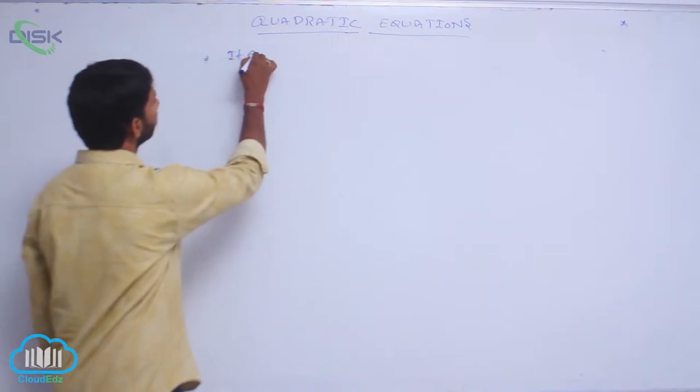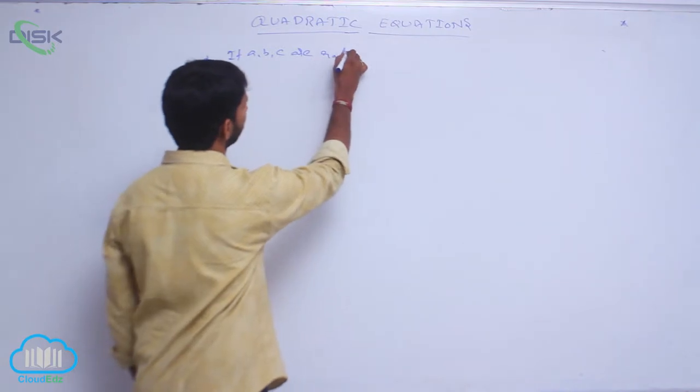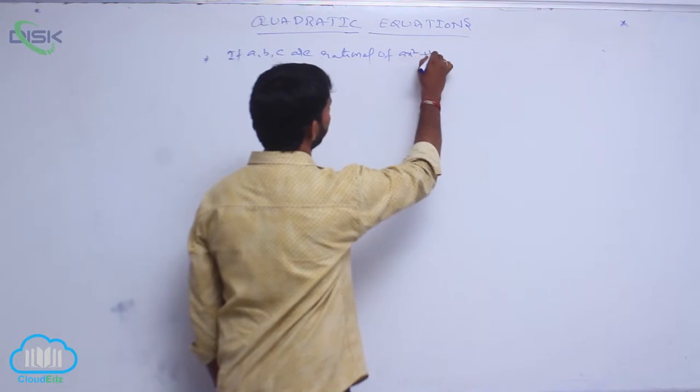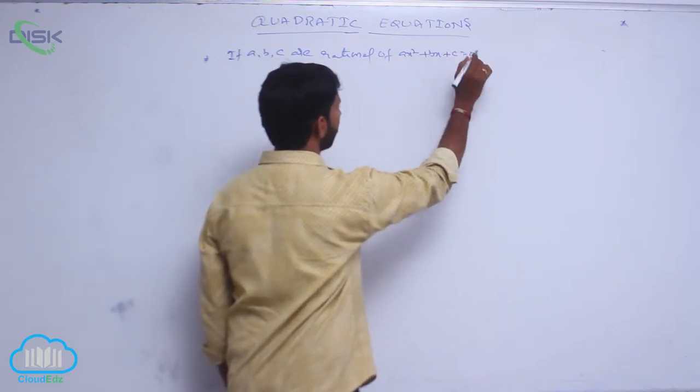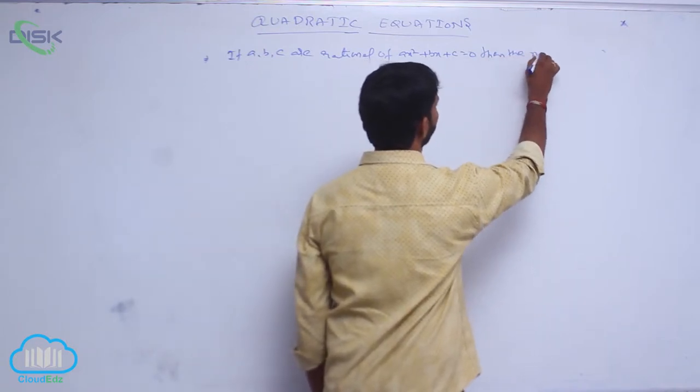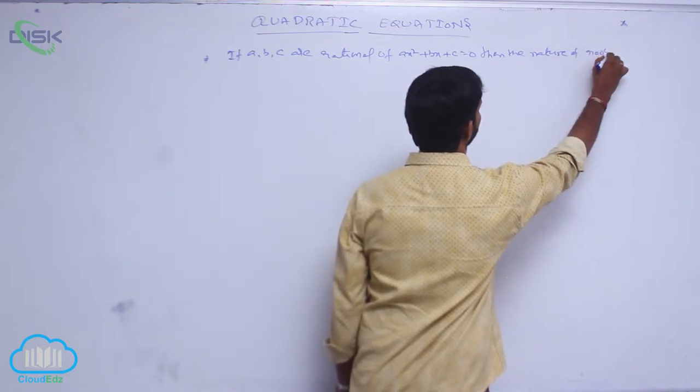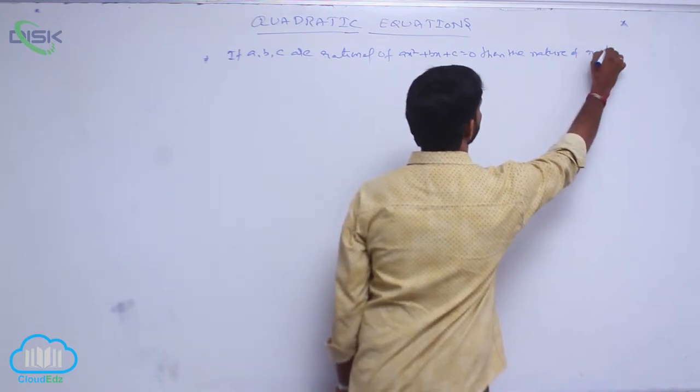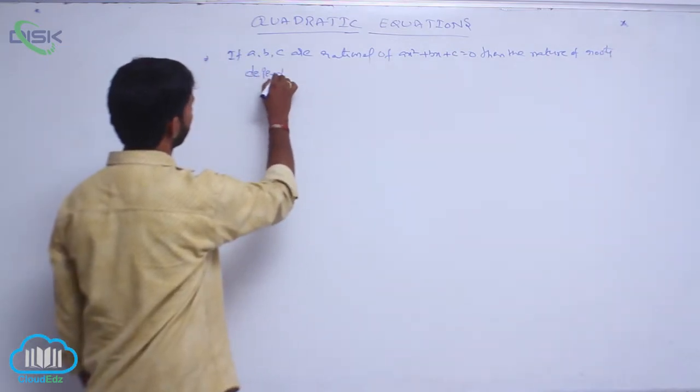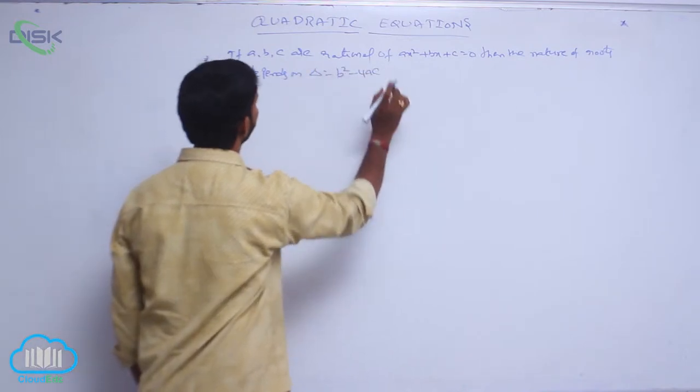If A, B, C are coefficients of the equation Ax² + Bx + C = 0, then the nature of roots depends on the discriminant delta, which equals B² - 4AC.